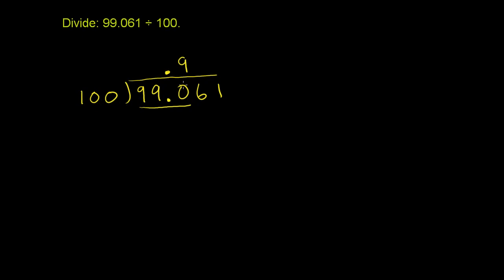100 goes into 990 9 times. 9 times 100 is 900. And then we can subtract. So 990 minus 900 is 90. We could do that in our heads. You could say 0 minus 0 is 0. 9 minus 0 is 9. These guys cancel out.